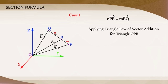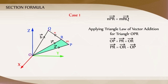Applying the triangle law of vector addition for the triangle OPR, we get vector OP plus vector PR is equal to vector OR. That is, PR vector is equal to OR vector minus OP vector.